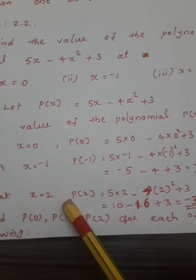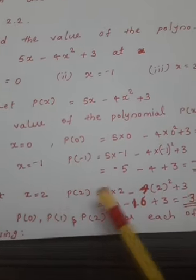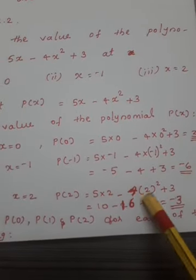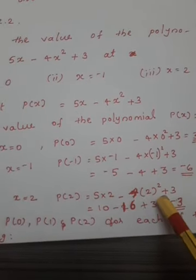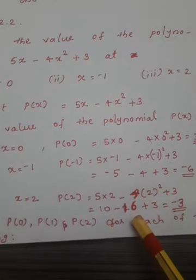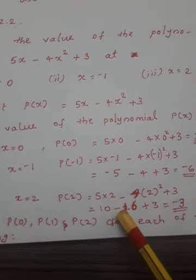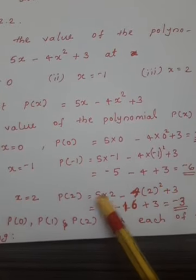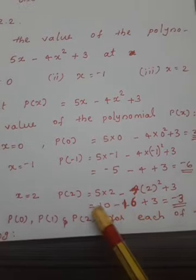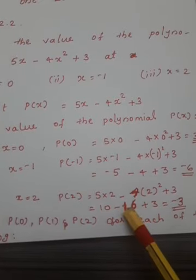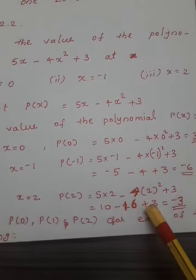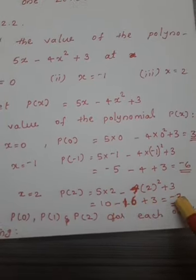At x equal 2, p of 2 equals 5 into 2 minus 4 into 2 square plus 3. Two square is 4, and 4 into 4 is 16. Then 5 into 2 is 10. So we have 10 minus 16 plus 3. Ten minus 16 is negative 6, and negative 6 plus 3 is negative 3.